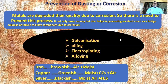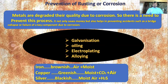Galvanization is applying a layer of a non-corrosive metal on the corrosive metal. This process is also adapted in electroplating. Zinc is applied in the form of a layer on corrosive metals like iron, copper, or aluminium. Zinc is a non-corrosive metal.